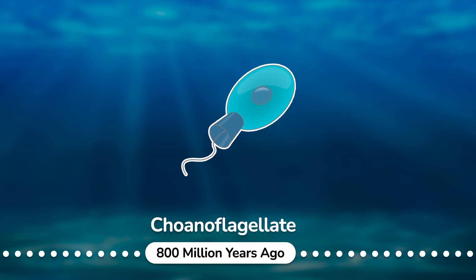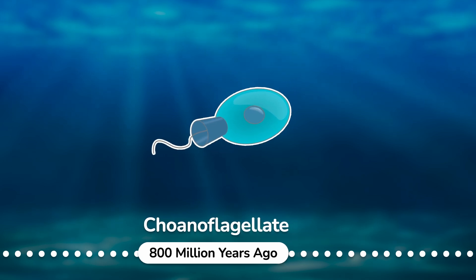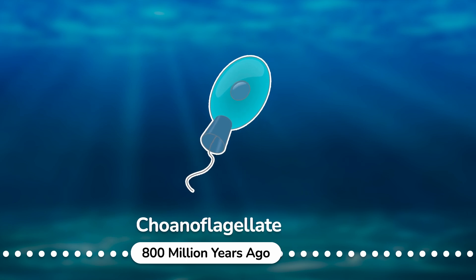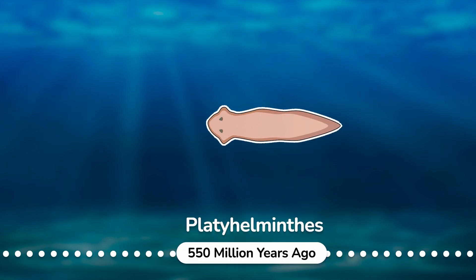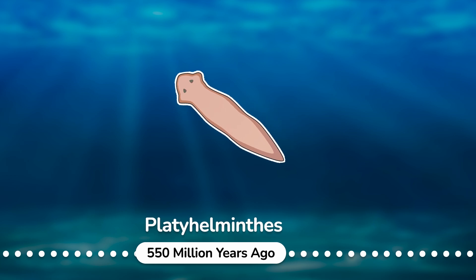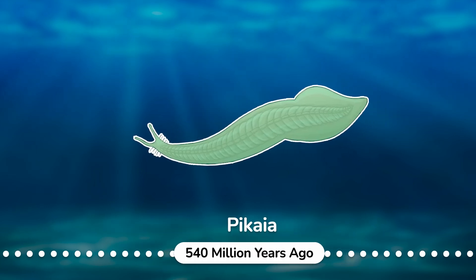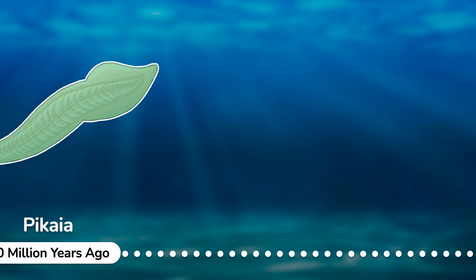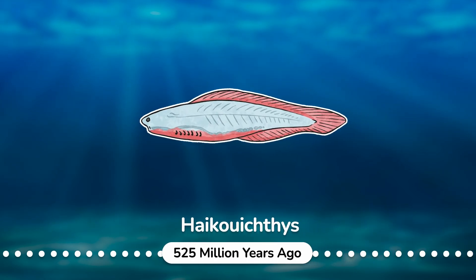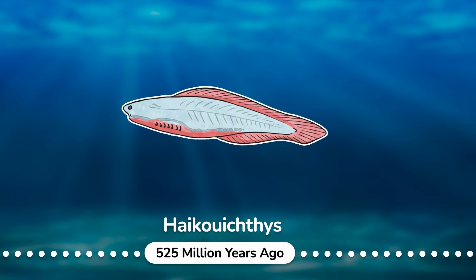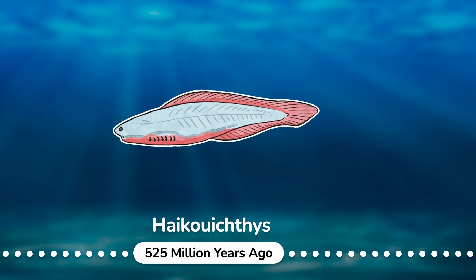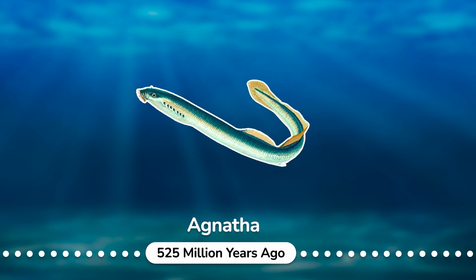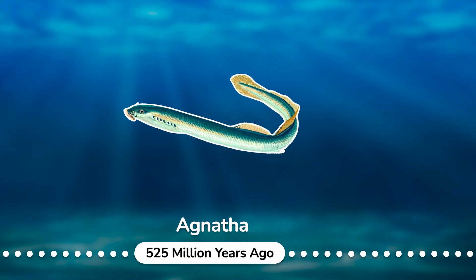Choanoflagellate: a group of free-living unicellular and colonial flagellate eukaryotes, considered to be the closest living relatives of the animals. Platyhelminthes: simple bilaterian unsegmented soft-bodied invertebrates. Pikaia: an extinct primitive chordate animal. Haikouichthys: an extinct genus of craniate that lived 525 million years ago. Agnatha: an infraphylum of jawless fish in the phylum Chordata, subphylum Vertebrata.